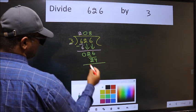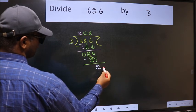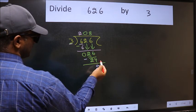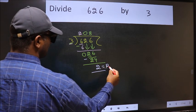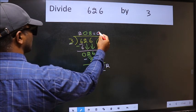Now we should subtract. We get 2. No more numbers to bring it down, so we stop here. This is our remainder and this is our quotient.